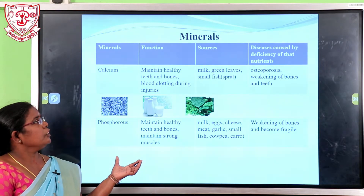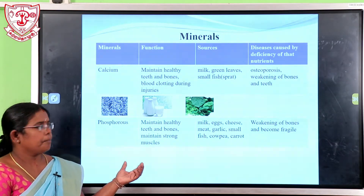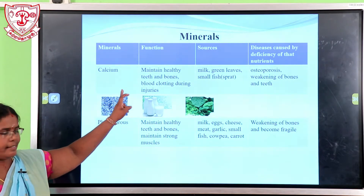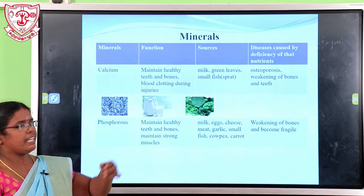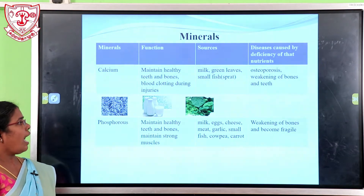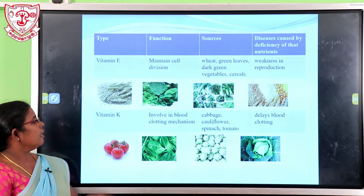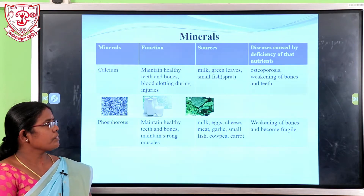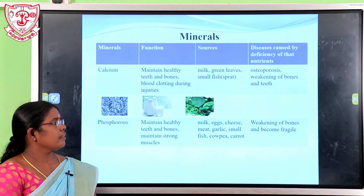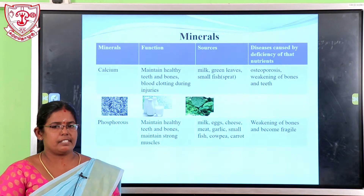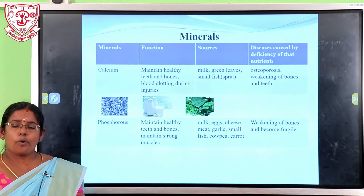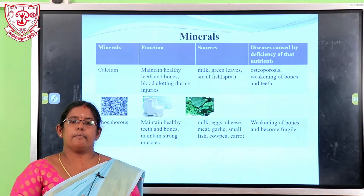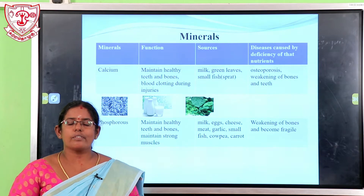Another nutrient group is minerals. The first mineral is calcium. Calcium is needed to maintain healthy teeth and bones, and aids blood clotting during injuries. Sources of calcium include milk, green leaves, and small fish. Deficiency of calcium causes osteoporosis and weakening of bones and teeth.